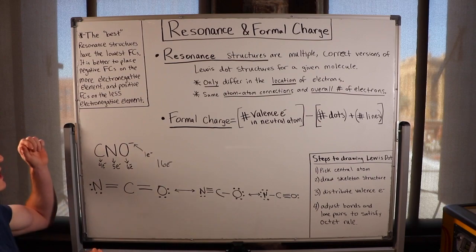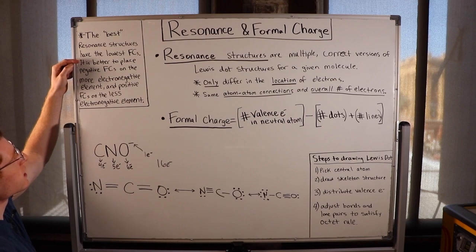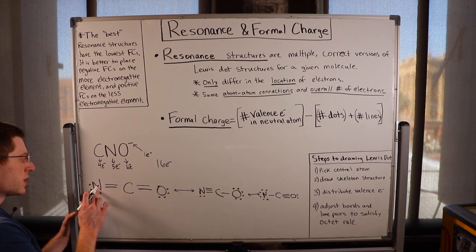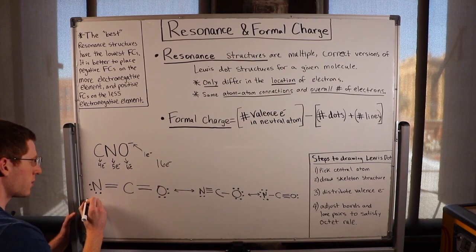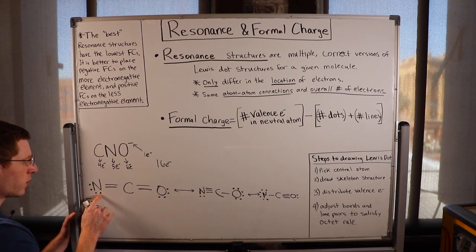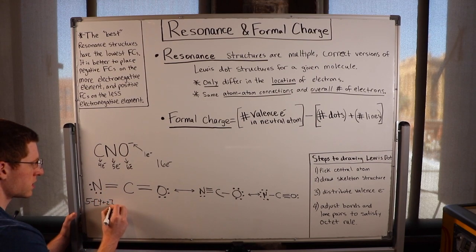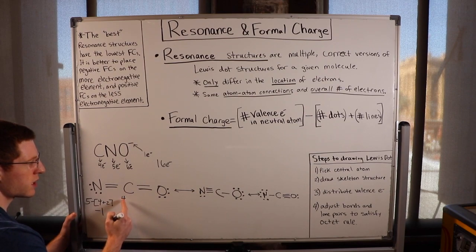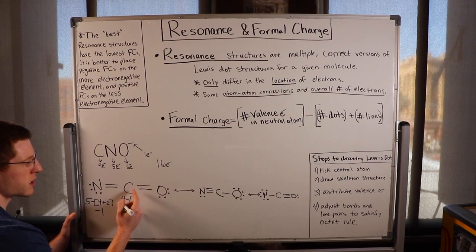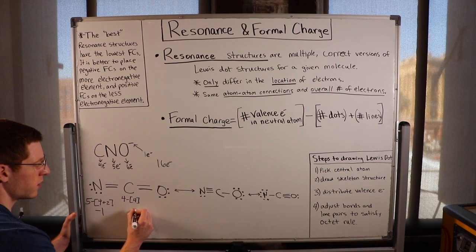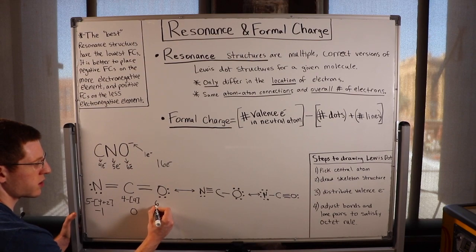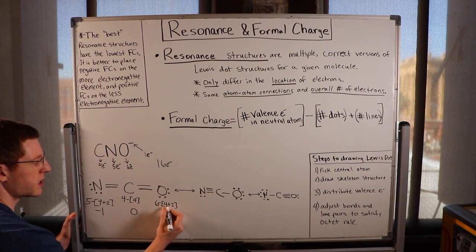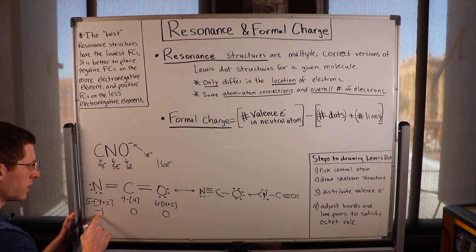To pick the best resonance structure, we calculate the formal charges. We want the lowest formal charges, and it's better to have negative formal charges on the more electronegative elements. For the first structure: nitrogen has 5 valence electrons minus 4 dots plus 2 lines — 5 minus 6 equals negative 1. Carbon is 4 minus 0 dots plus 4 lines — 4 minus 4 equals 0. Oxygen is 6 minus 4 dots plus 2 lines — 6 minus 6 equals 0. So we have only a negative 1 on nitrogen.